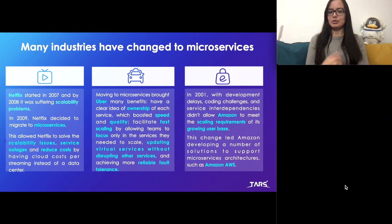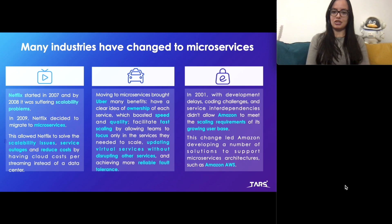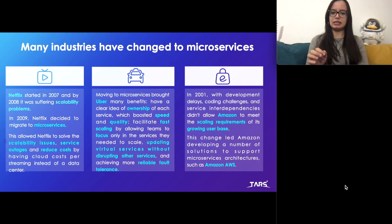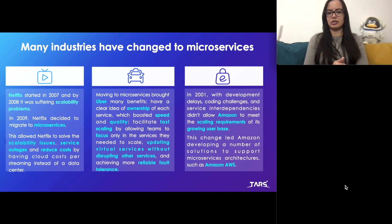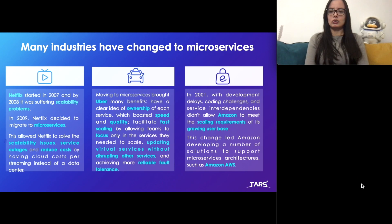Amazon is another example — in 2001 they had a lot of problems with their current architecture, including development delays and highly interconnected services that led to scalability problems, while their user base was growing rapidly. They changed to microservices, which made scalability possible. Nowadays they even offer a microservices architecture as a product, which is Amazon AWS.